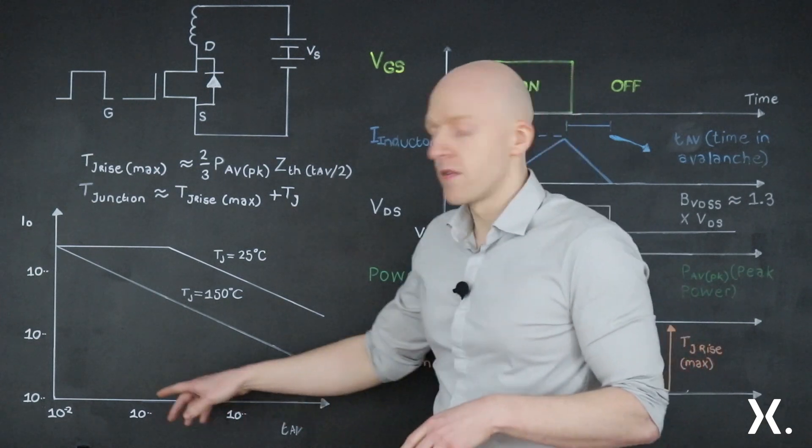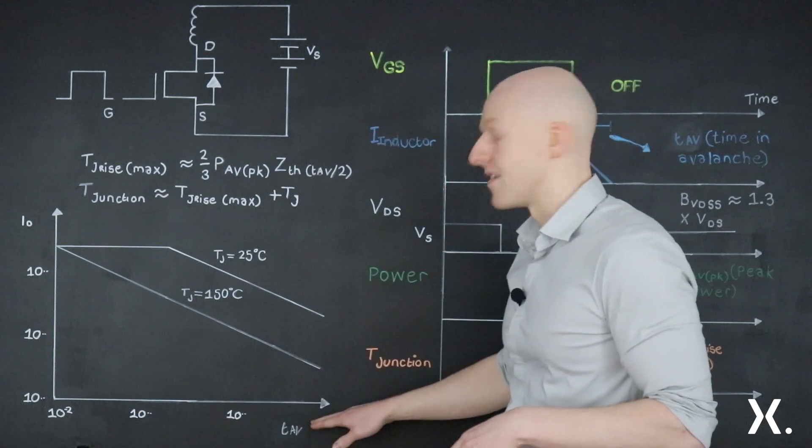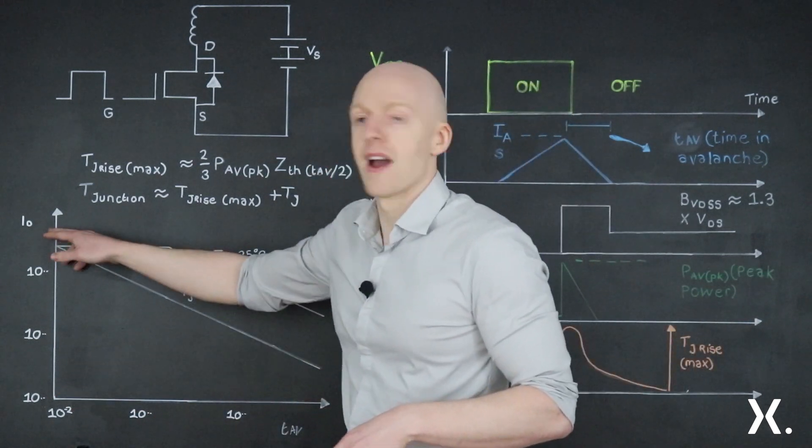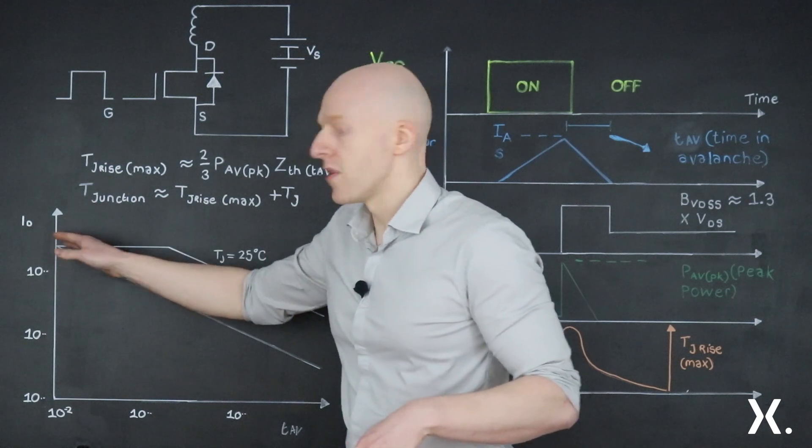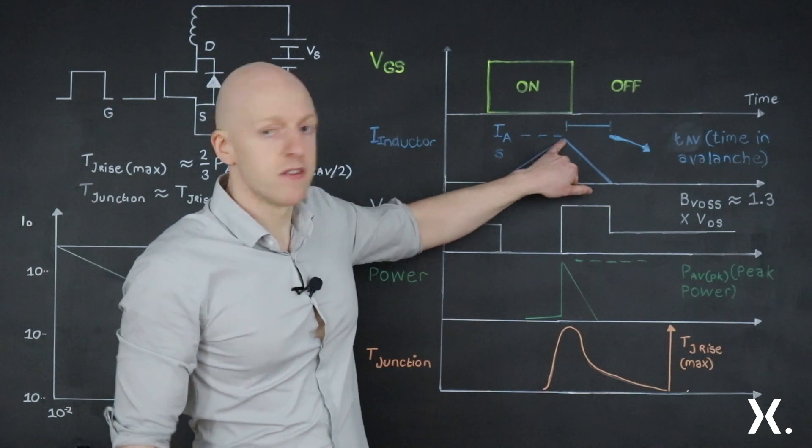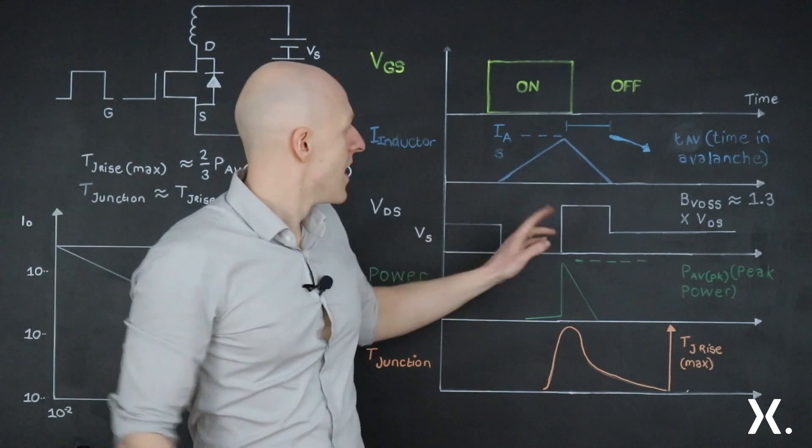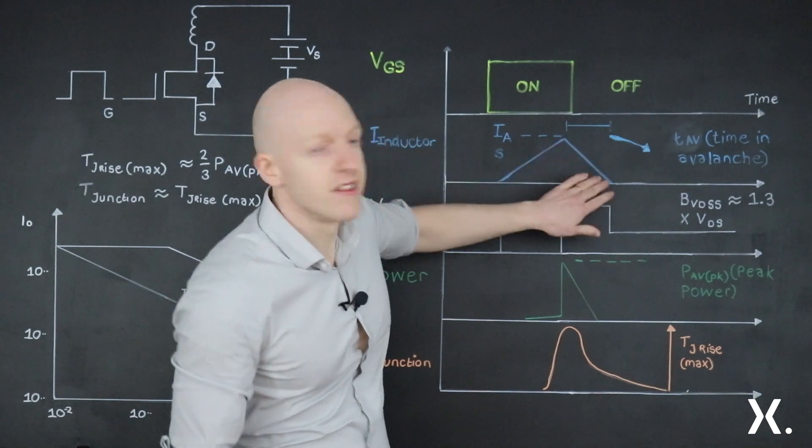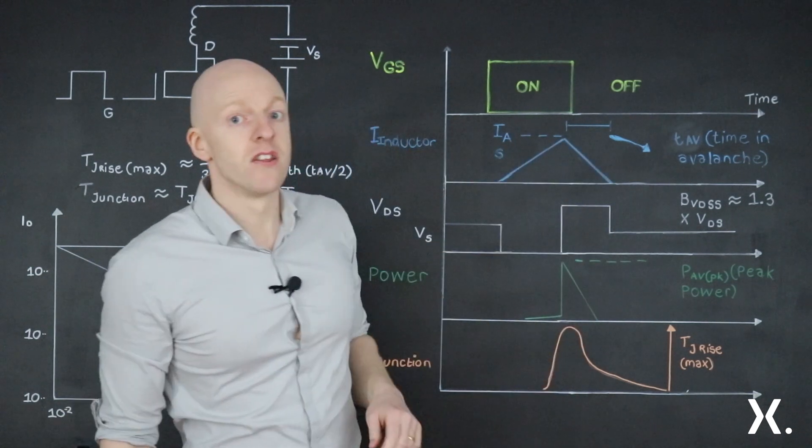So if we take a closer look, on the bottom axis here, we have the time spent in avalanche. And on the y-axis here, we have the current, the peak current. So what that equates to, back to our waveforms over here, is that's our peak current, so when we enter avalanche. And then the time in avalanche is the period where we have the high voltage, the breakdown voltage, and current is decaying in the inductor.